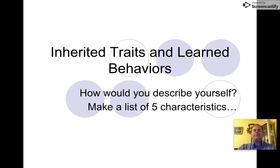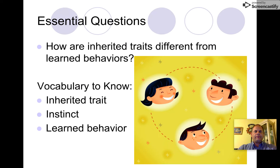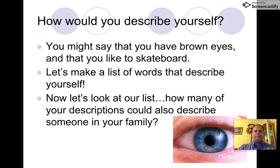What's the difference between an inherited trait and a learned behavior? List five things about yourself in your mind. Some things to consider: what is an inherited trait, what is an instinct, and what is a learned behavior? You might say you have brown eyes and that you like to skateboard.